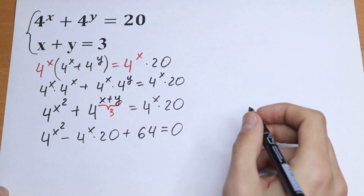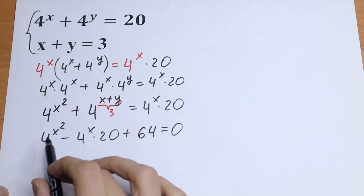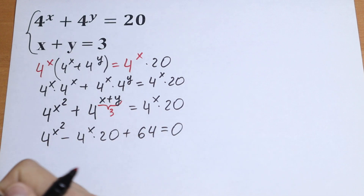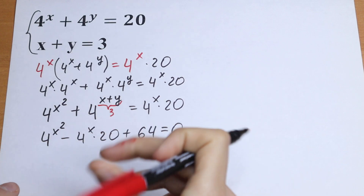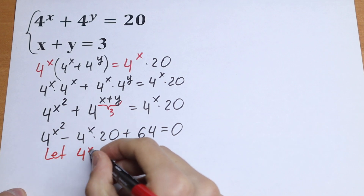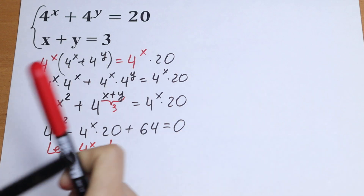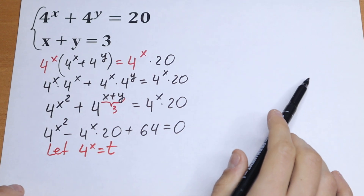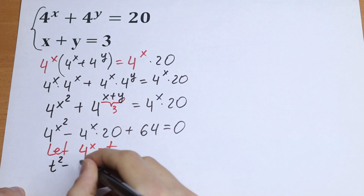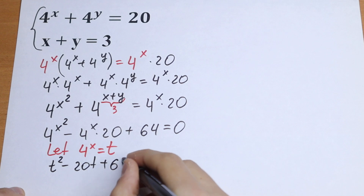What are we going to do next? Of course, this is a really good case because we have 4 to the power x squared and 4 to the power x, so it's a great moment to use a substitution. Let 4 to the power x equal t. Then we have an interesting classic quadratic equation: t squared minus 20t plus 64 equals 0.